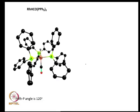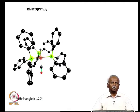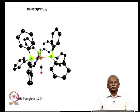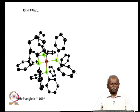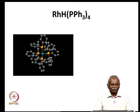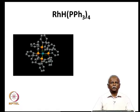In the CO complex, the P–Rh–P equatorial angle is close to 120°. In the tetrakis-triphenylphosphine complex, the P–Rh–P angle is close to 109°, consistent with near-tetrahedral geometry from the four large phosphine ligands. The hydrogen is almost invisible sterically, sitting on a face of the tetrahedron and not demanding the full fifth coordinate position.